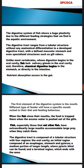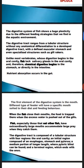Fish that eat other fish have an extraordinarily large mouth to accommodate large prey when they catch them. The digestive tract is composed of a tubular structure and has four regions: the oral cavity as the initial region, followed by the esophagus, stomach, pylorus, and a medium portion where the pyloric caeca are found — blind-ended structures. Finally there is a terminal region which ends at the anus.